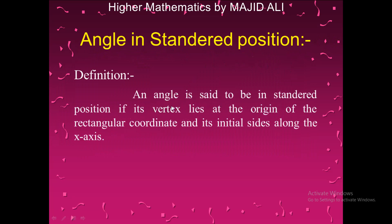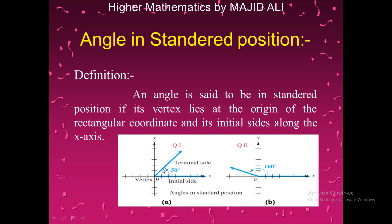Our next topic is the angle in standard position. An angle is in standard position if its vertex lies at the origin of the rectangular coordinate system and its initial side is along the positive x-axis. In the diagram, you can see the initial side along the x-axis, and the vertex is the common meeting point of the two rays.